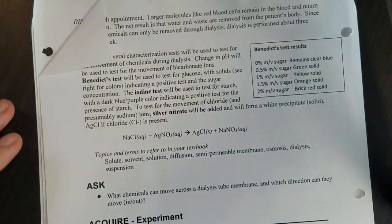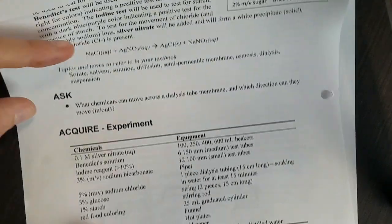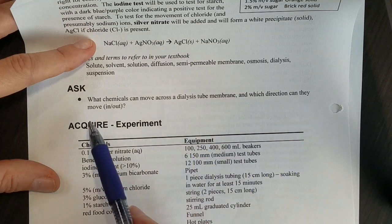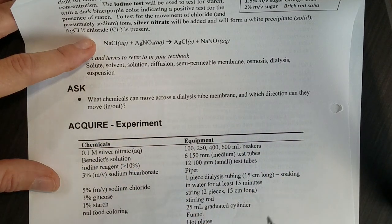Our question today is: what chemicals can move across the dialysis membrane and which direction can they move? Can they move from the blood to the surroundings, or surroundings to the blood?